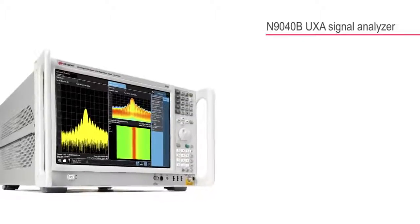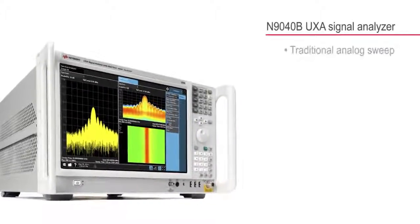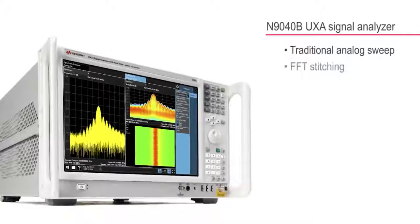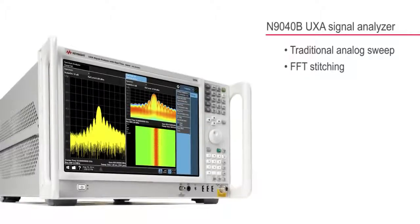This product, like all X-Series signal analyzers, is capable of both the traditional analog sweep and FFT stitching to move through the spectrum. Traditional analog sweeps are still used for wide frequency ranges and FFTs are generally used for medium or smaller spans. Some of this depends on the resolution bandwidth filter and capabilities of the instrument.